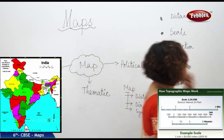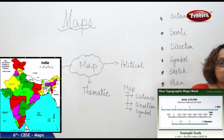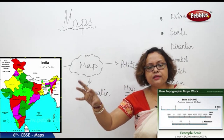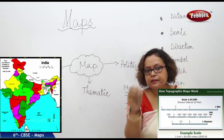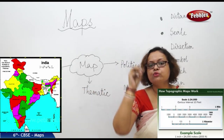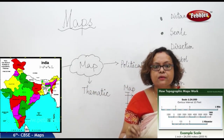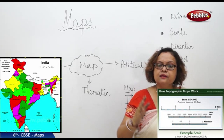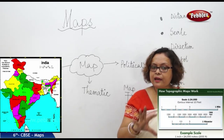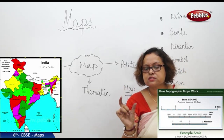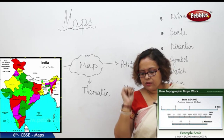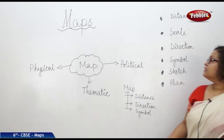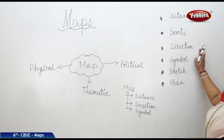So, if your village or local area is mapped, we call it a large scale map. If we are looking at a world map, that is a small scale map. Now let us come to the next component: direction.